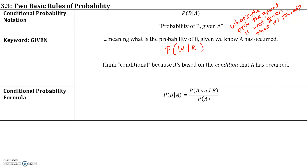Think 'conditional' because it's based on the condition that A has occurred — the second event listed, A, has already occurred. It has already rained, so what is the probability that the ground is now wet? The formula for conditional probability is: the probability of B given A equals the probability of A and B occurring divided by the probability of A.